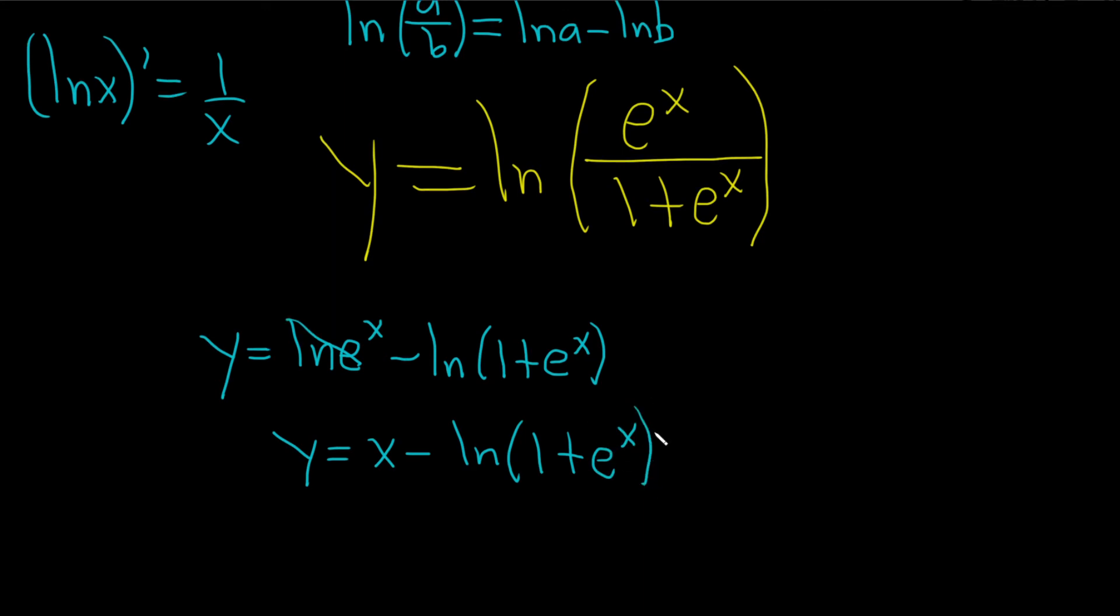Okay, now we're in a good place. Now we can take the derivative. So let's do it. So dy/dx, or y prime. So the derivative of x is just 1. So we have 1 minus. And then when you take the derivative of this natural log, you just use this formula here.